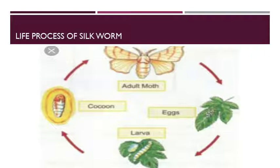The pupa emerges from the cocoon as a silk moth. In cultivated silk, the larvae is killed inside the cocoon in order to extract the silk. The male and female moths then mate and the female moth lays eggs.